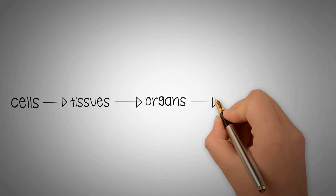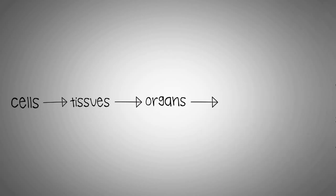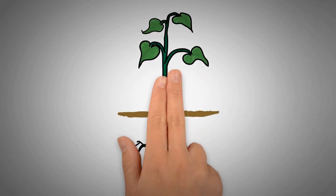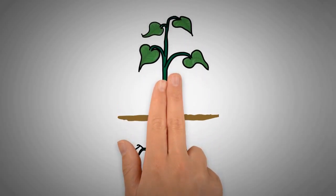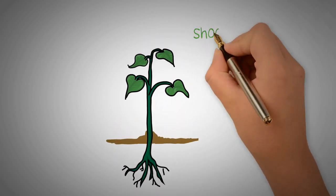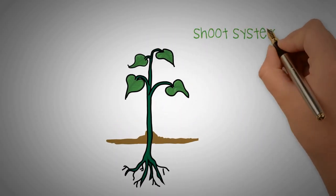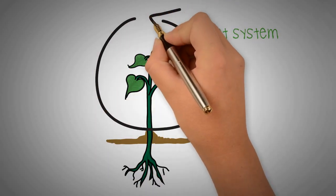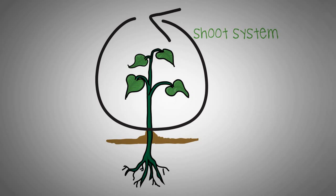Finally, plant organs are arranged into organ systems. The leaves and stem are above the ground and make up the shoot system. The roots are below the ground and make up the root system.